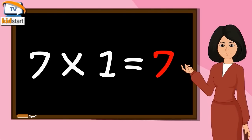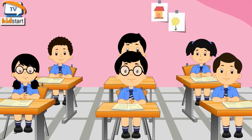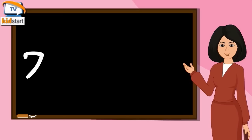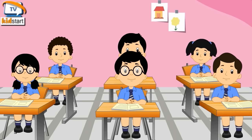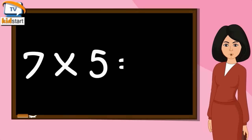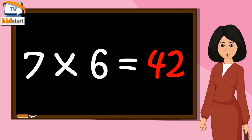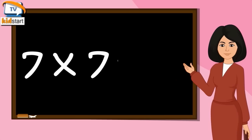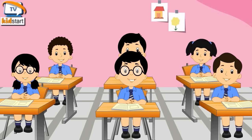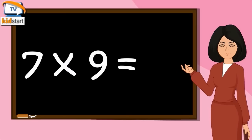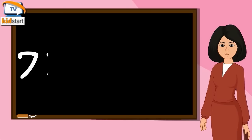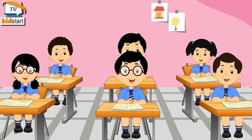Seven ones are seven. Seven twos are fourteen. Seven threes are twenty-one. Seven fours are twenty-eight. Seven fives are thirty-five. Seven sixes are forty-two. Seven sevens are forty-nine. Seven eights are fifty-six. Seven nines are sixty-three. Seven tens are seventy.